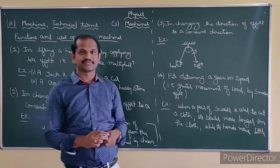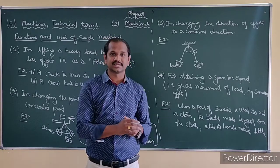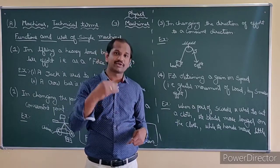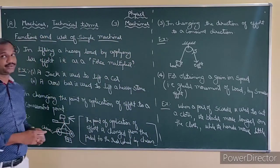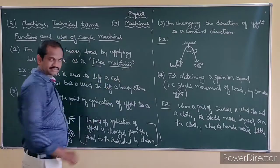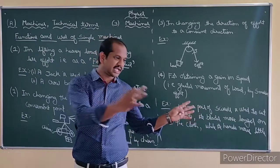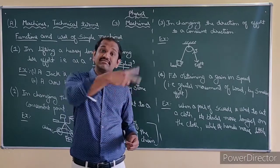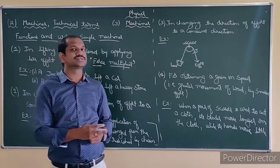In lifting a heavy load by applying less effort — why are we using machines? We have to do the same work but we have to use less effort. It is not that if machines do the work we get more strength — no. We have to use less effort but the same amount of work has to be done. That is the concept of using machines. The machine acts as a force multiplier — whatever force we apply, the machine converts it and multiplies it.